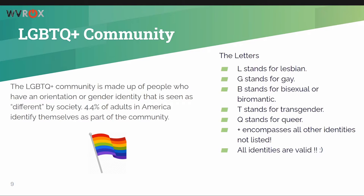Let's dive into who's in the community. L stands for lesbian, G for gay, B for bisexual or biromantic, and T for transgender. A lot of people end the acronym there, but Q stands for queer — a reclaimed slur that people have taken back as their own identity. It's a very fluid, umbrella term covering a wide span. The plus is also an umbrella term encompassing all other identities not listed, which is a lot of them.